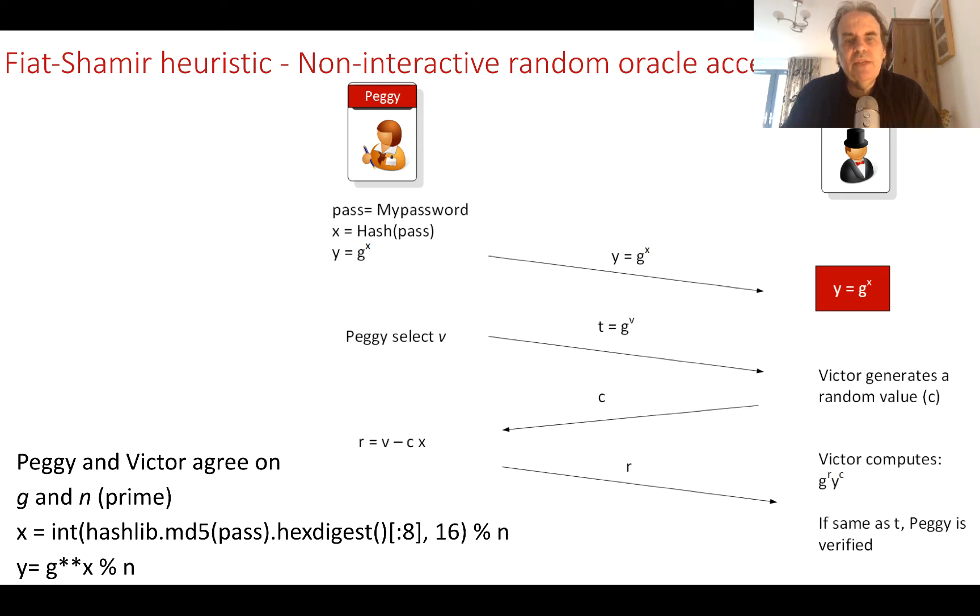The Fiat-Shamir heuristic is also defined as non-interactive random oracle access. We have several random oracles that we use, and it's not possible for an intruder to guess Peggy's password from these values. Initially, she creates her password and then creates a hash of the password. She takes a hash of it and creates an integer value. We can do this in Python by taking an MD5 hash and converting it to an integer. All along, we take what's called the mod p or mod n operation.